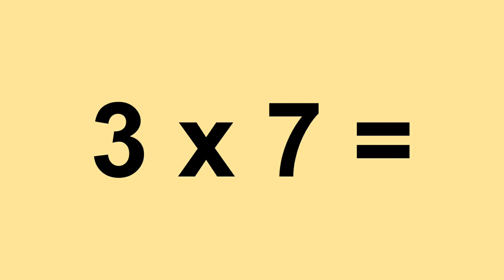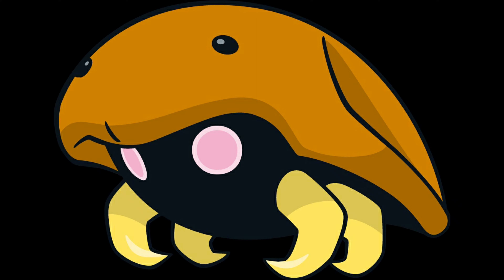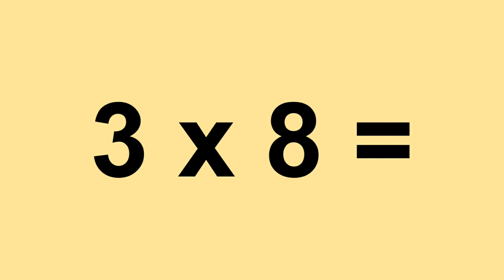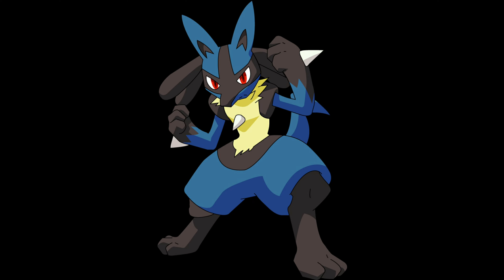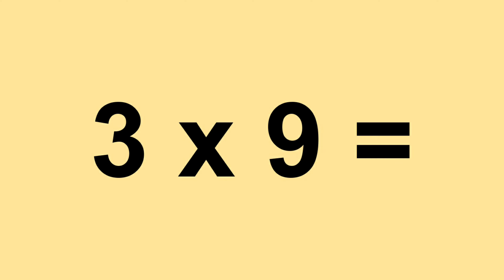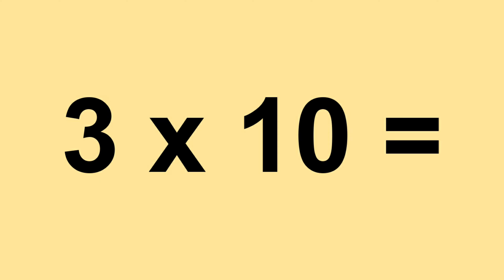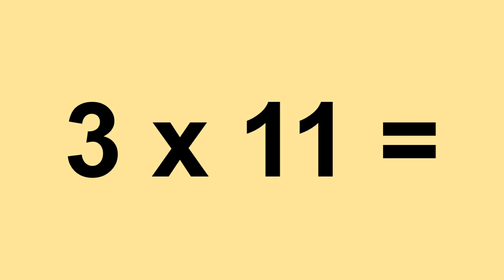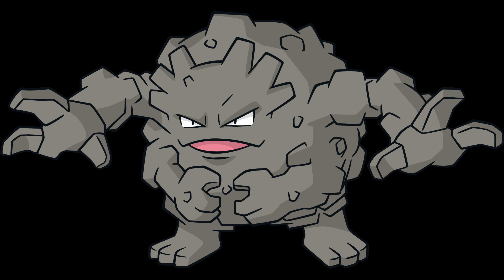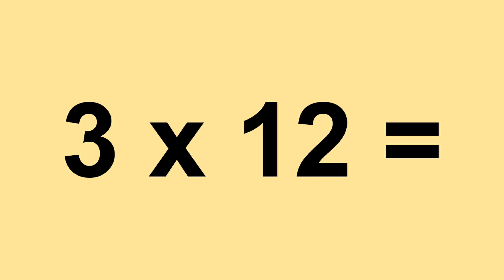Three times seven equals twenty-one. Three times eight equals twenty-four. Three times nine equals twenty-seven. Three times ten equals thirty. Three times eleven equals thirty-three. Three times twelve equals thirty-six.